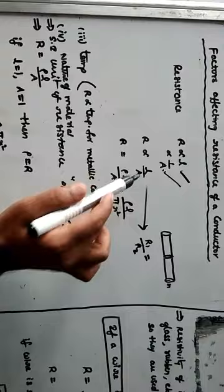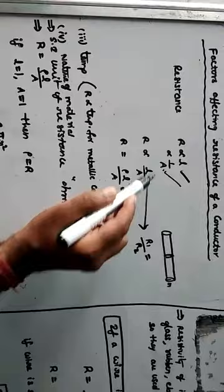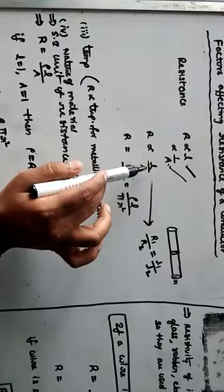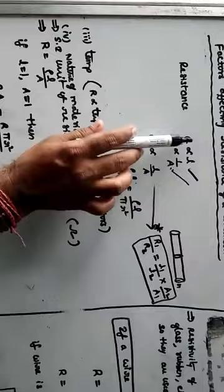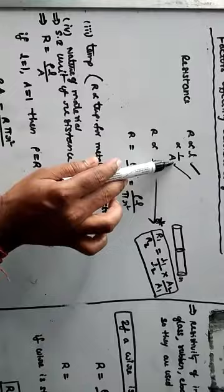For two cases, R1 by R2 equals L1 by L2 into A2 by A1. Since R is directly proportional to L, L1 by L2 is written as is. But since A is inversely proportional, it reverses — so A2 by A1 is written. This is the useful formula.